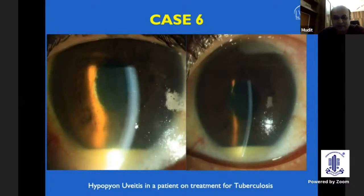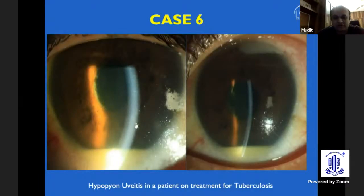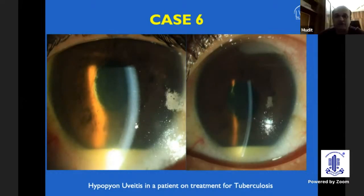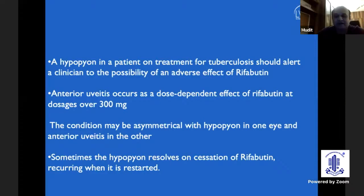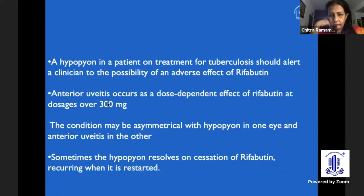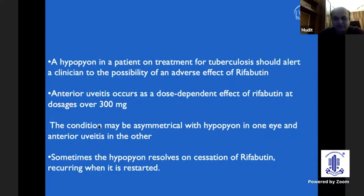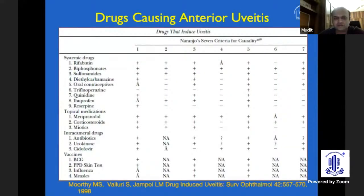This is a hypopion uveitis in a patient on treatment for tuberculosis. Again, the importance of drug history — the patient was taking rifabutin. A dose-dependent adverse effect of rifabutin is the presence of hypopion; anybody taking more than 300 mg can sometimes develop a hypopion. This condition may be asymmetrical, and the hypopion may resolve just by cessation of rifabutin. So if a patient with tuberculosis on ATT comes back with sudden onset hypopion, go back and ask about the specific drugs being used. Rifabutin and bisphosphonates are among the common culprits.